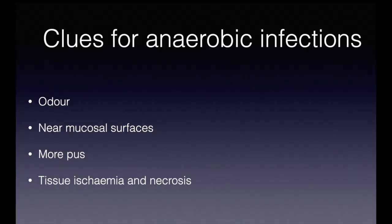There are a few clinical criteria which would make us suspect an anaerobic infection. Firstly, the foul odor — this is thought to be due to N-butyric acid produced by the anaerobes. Secondly, infections in the proximity of mucosal surfaces should raise the suspicion of anaerobic infections, and these infections have a tendency to produce a profuse amount of pus.